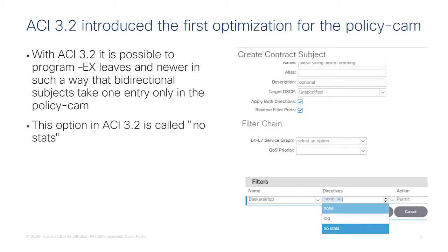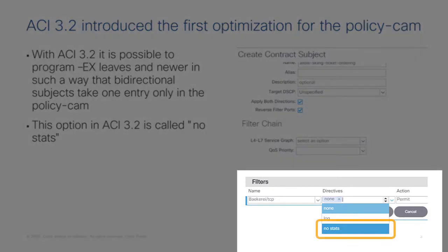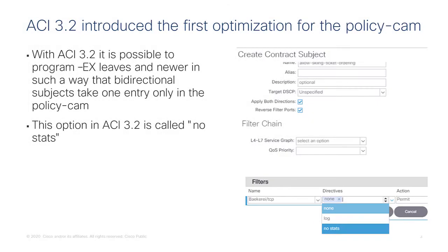This feature was introduced in 3.2 and is enabled at the filter level using the option called "no stats", which highlights the fact that statistics are not granular to the EPG-to-EPG pair when using this feature. We'll talk about that more in a moment.